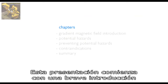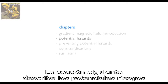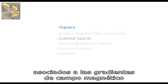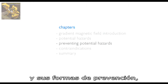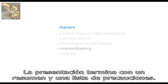This presentation begins with a short introduction of the system creating the dynamic gradient magnetic field. The next section describes the potential hazards of the gradient magnetic field and the way in which they can be prevented, followed by the consideration of possible contraindications. Finally, the presentation concludes with a summary and a list of the appropriate safety precautions.